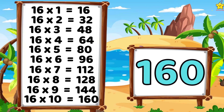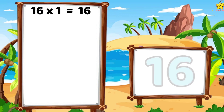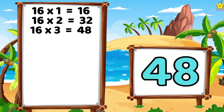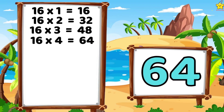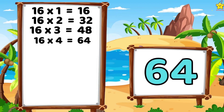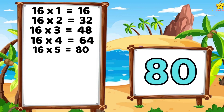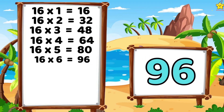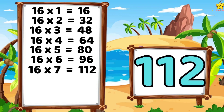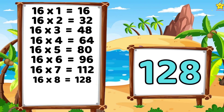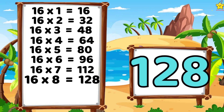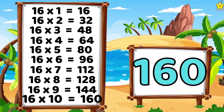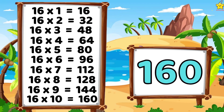Let's again. 16 ones are 16. 16 twos are 32. 16 threes are 48. 16 fours are 64. 16 fives are 80. 16 sixes are 96. 16 sevens are 112. 16 eights are 128. 16 nines are 144. 16 tens are 160.